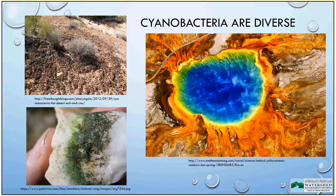Cyanobacteria are very diverse. In addition to being found in freshwater environments, they can grow well in extreme environments. They are part of the desert crust in arid areas, and they can form a symbiotic relationship with fungi to form lichen. The image on the right is an aerial view of Grand Prismatic Hot Springs in Yellowstone — the colors are connected to cyanobacteria and other heat-loving bacteria organized according to the water temperature they prefer for growth.